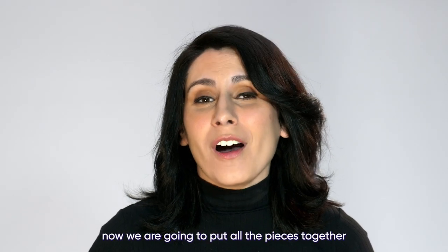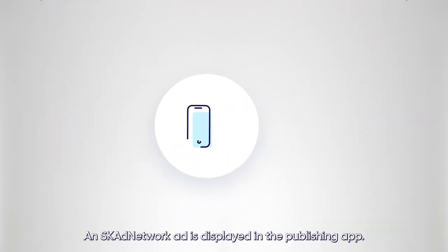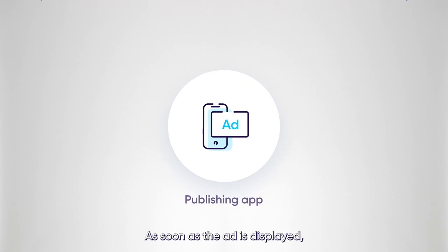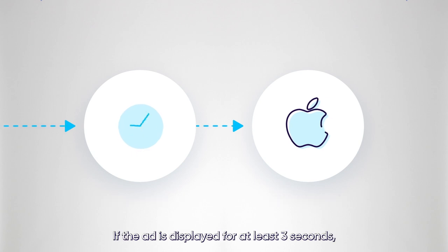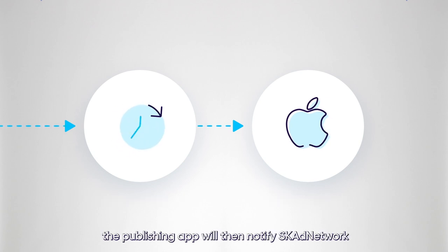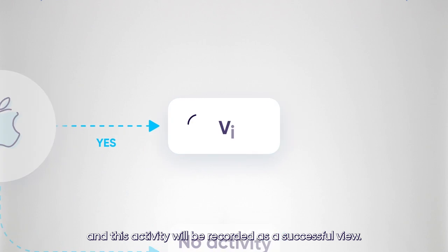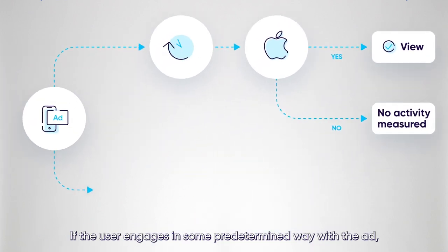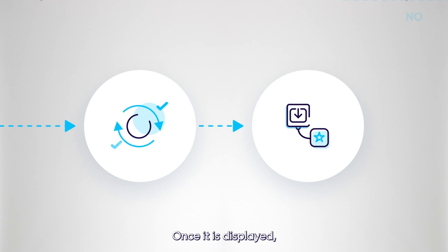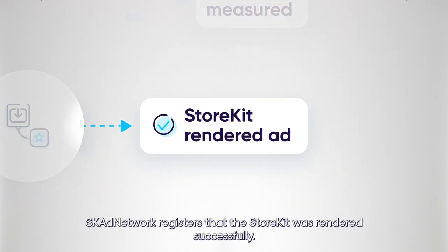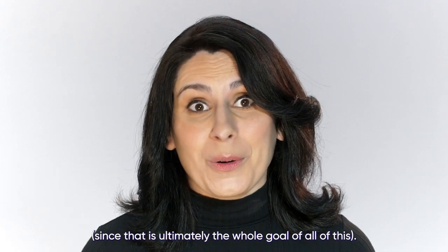Now we're going to put all the pieces together by taking a look at the SKAdNetwork flow and how it works. An SKAdNetwork ad is displayed in a publishing app. As soon as the ad is displayed, the publishing app starts the three-second timer and notifies SKAdNetwork that it has started. If the ad is displayed for at least three seconds, the publishing app notifies SKAdNetwork that the timer is up, and this activity is recorded as a successful view. If the user engages in some predetermined way with the ad, the publisher renders the advertised app store kit. Once displayed, SKAdNetwork registers that the store kit was rendered successfully. The next step would hopefully be for the user to download the advertised app, since that is ultimately the whole goal of all of this.